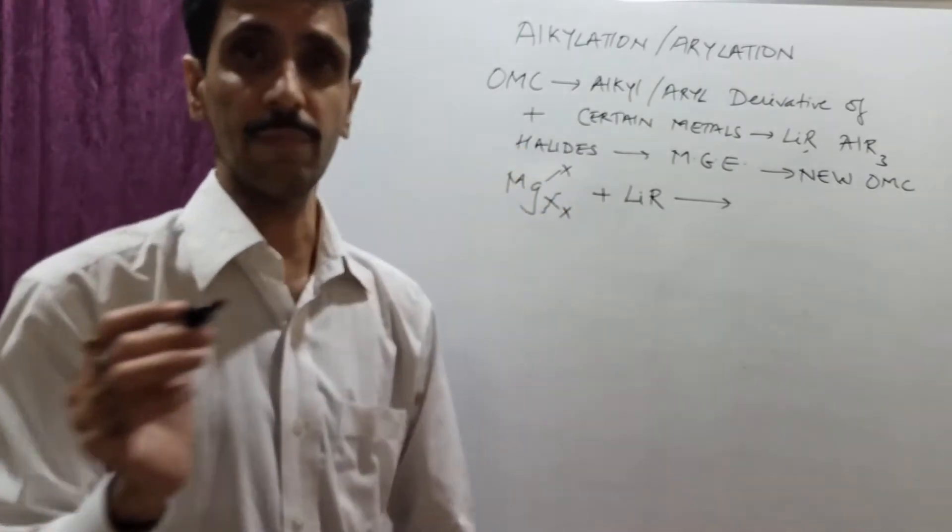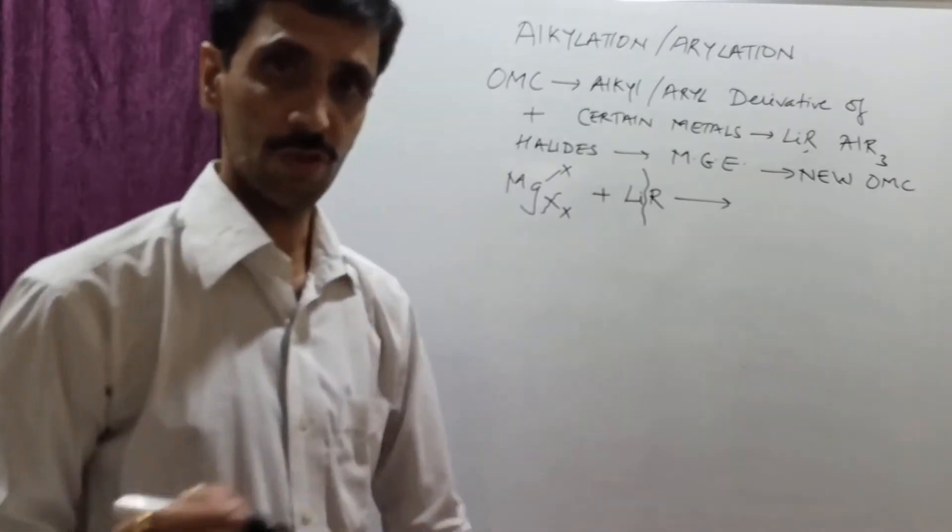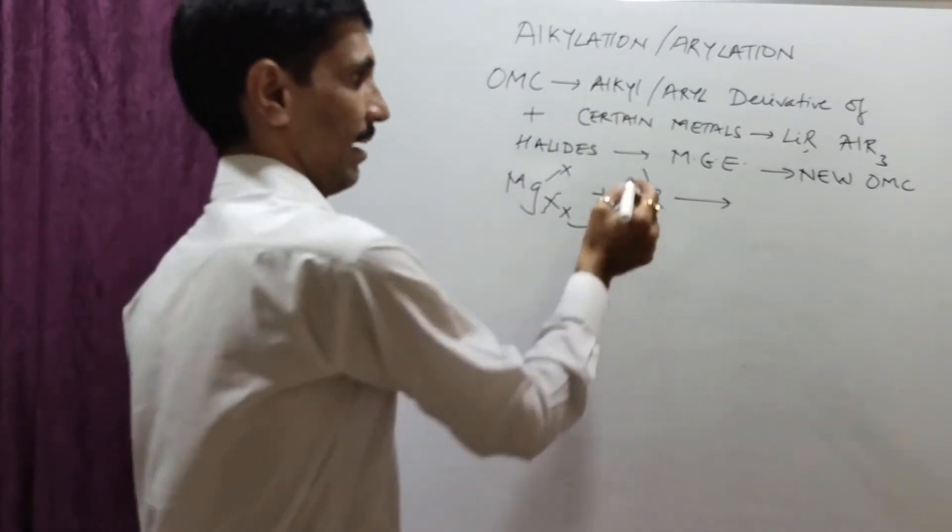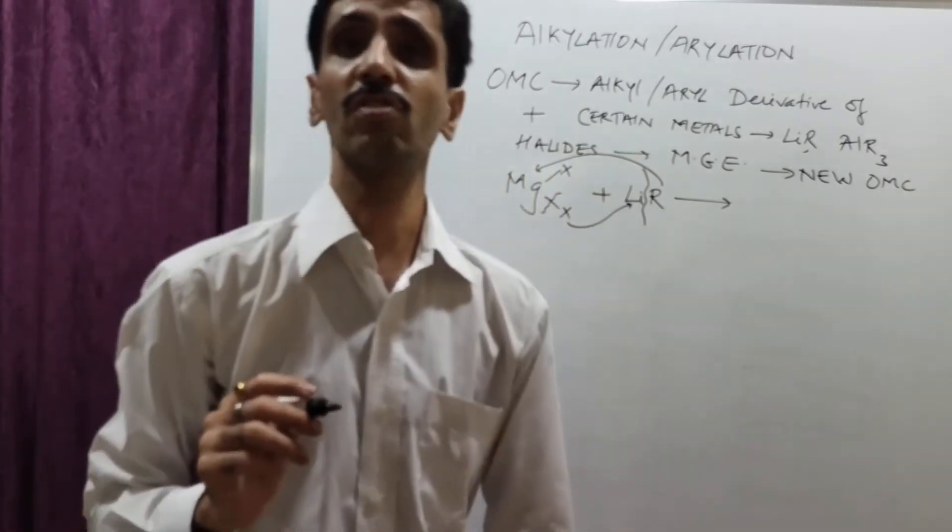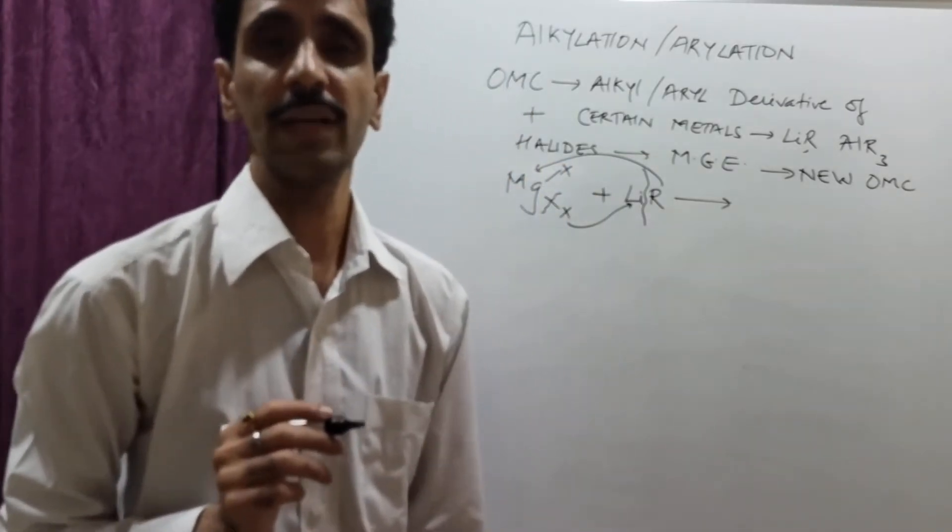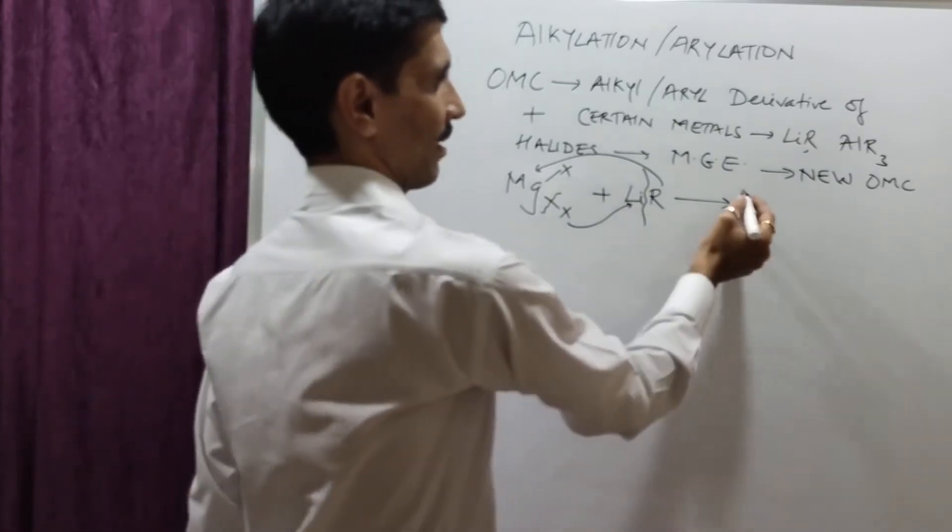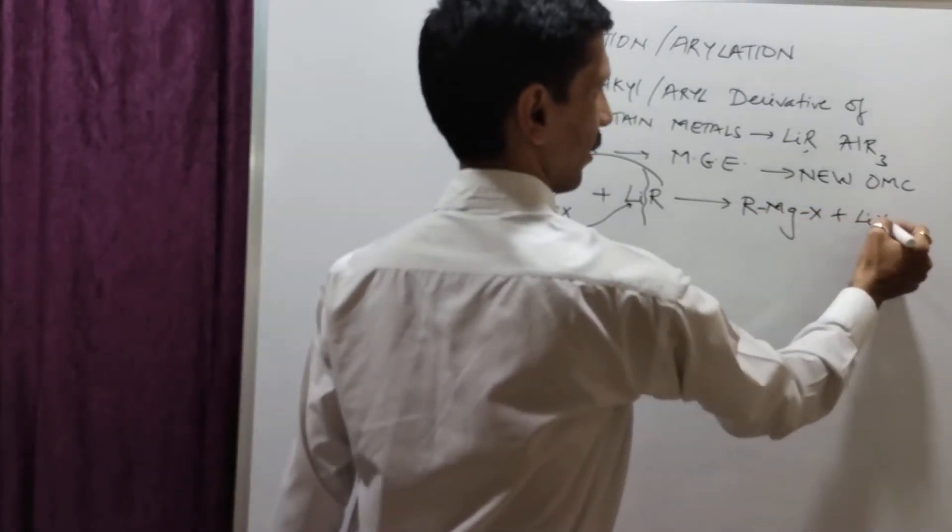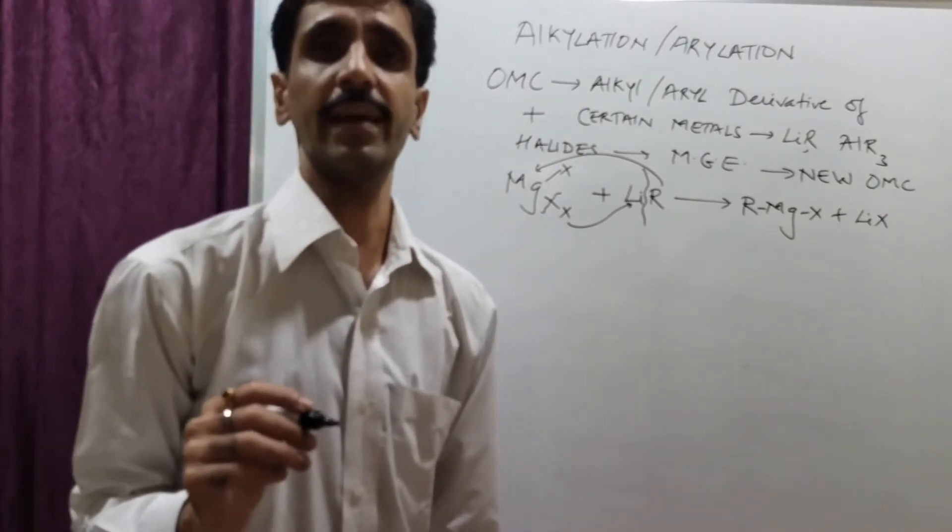The bond between Li and R is going to break. The X will go towards Li. And then, this R will form a bond with magnesium and gives you the most prominent reagent in organic chemistry. Yes, you guys are right. It's Grignard reagent, RMgX. And plus, of course, I'm getting LiX.